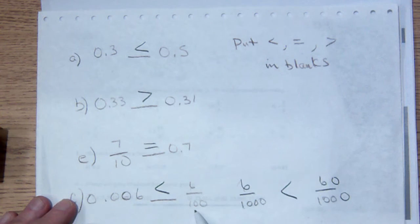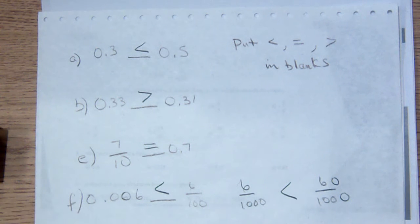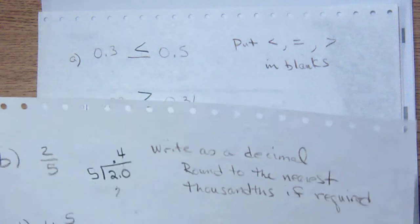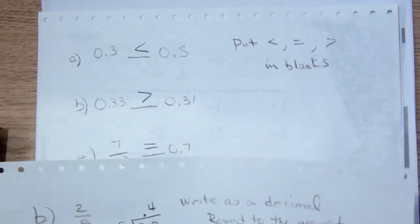But I can change these things to have an equivalent denominator by multiplying top and bottom here by 10. And so this is 60 over 1,000, meaning that the arrow points that way. And that's how I do that problem. The next suite of problems that we will discuss is writing a fraction as a decimal.